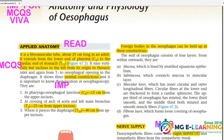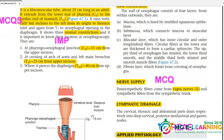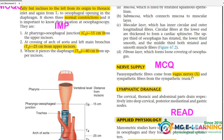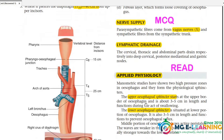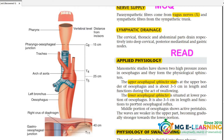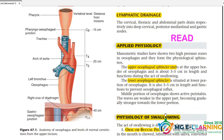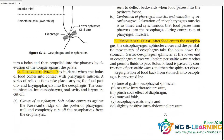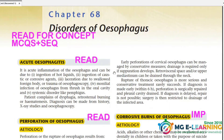Normal constrictions of the esophagus are important — you need to do this for viva and MCQ. Chapter 68 covers disorders of the esophagus, which is very important.